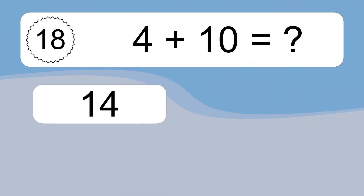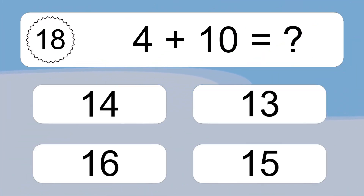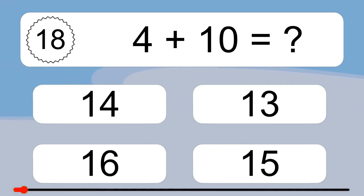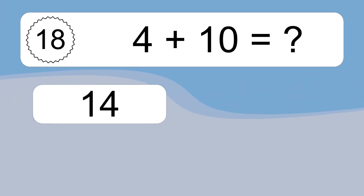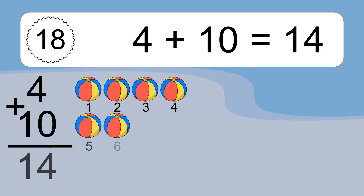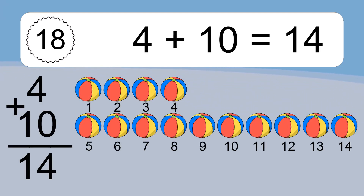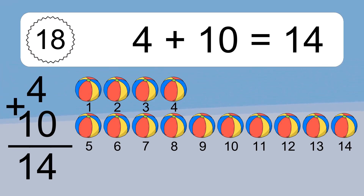4 plus 10 equals what? 4 plus 10 equals 14. Let's count it: 1, 2, 3, 4, 5, 6, 7, 8, 9, 10, 11, 12, 13, 14.